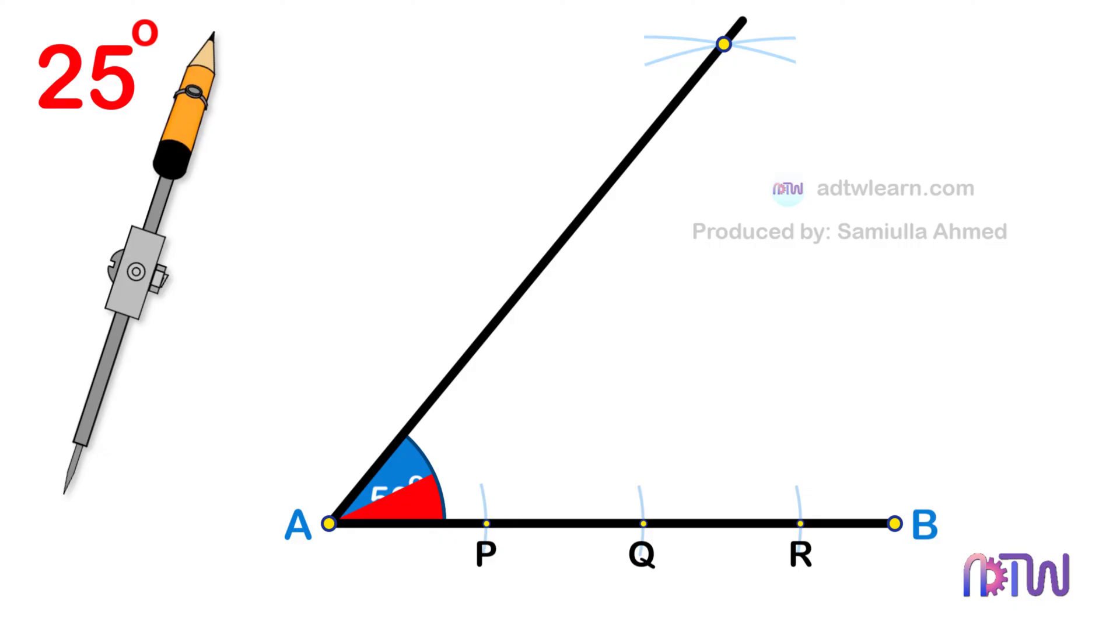Half of this 50-degree angle will be 25 degrees. Therefore, we need to divide this angle in half.